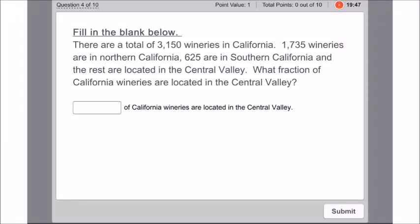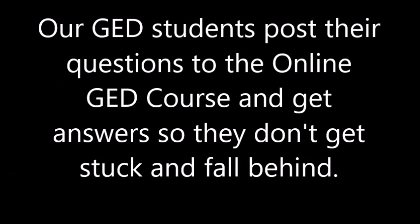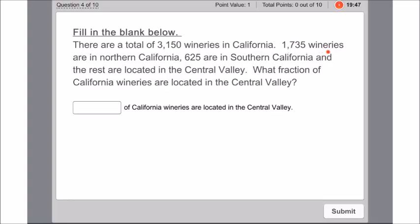Okay Jeff, this is the first video I mentioned I would make for you. You see here that there are a total of 3,150 wineries in California. 1,735 wineries are in northern California, 625 are in southern California, and the rest are located in Central Valley. What fraction of California wineries are located in Central Valley?